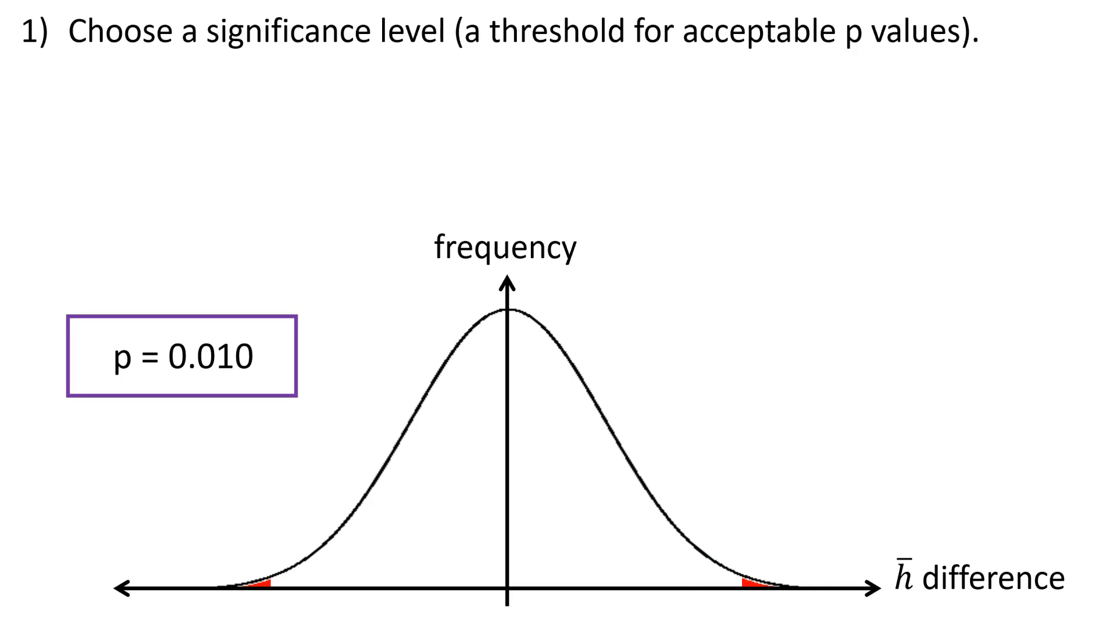Or maybe you make the p-value 0.01, which is an even higher standard. Your data has to be in this tiny sliver, or else you can't really reject the null hypothesis.